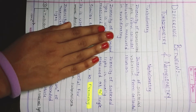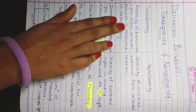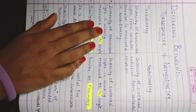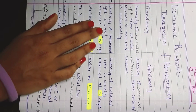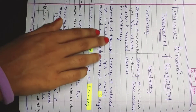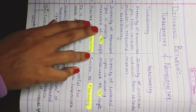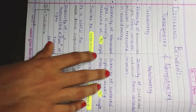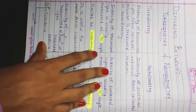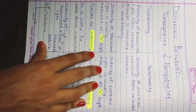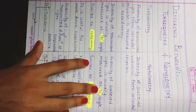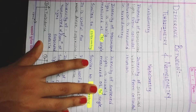So to summarize the first point: in turbidimetry we measure the intensity of transmitted light, and in nephelometry we measure the intensity of scattered radiation. The second point: the intensity of the transmitted light is usually measured at a 180-degree angle, and the intensity of scattered radiation is usually measured at a 90-degree angle.